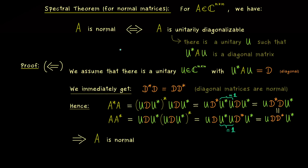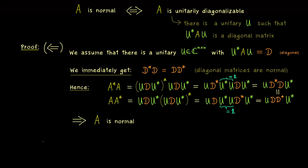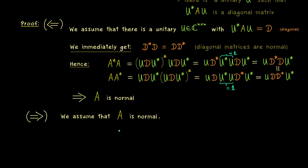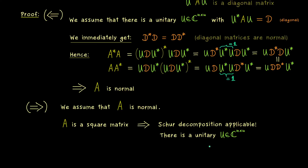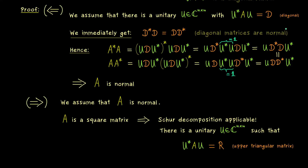For the next implication we will need the Schur decomposition for matrix A. The premise is that A is a square normal matrix. Having a square matrix already guarantees the Schur decomposition exists — this is what we showed in part 45 — and it tells us we can transform A into an upper triangular matrix R using a unitary matrix U, so that U* A U = R.